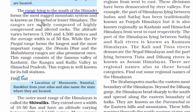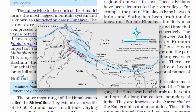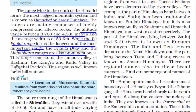Moving south, the second range is called the Himachal or Lesser Himalayas, with peak heights varying between 3,700 to 4,500 meters. The Pir Panjal is one of the longest and most important ranges here, followed by the Dholadhar and Mahabharata ranges. Famous valleys in this region include the Kashmir, Kangra, and Kullu valleys, and this region is well known for its hill stations.